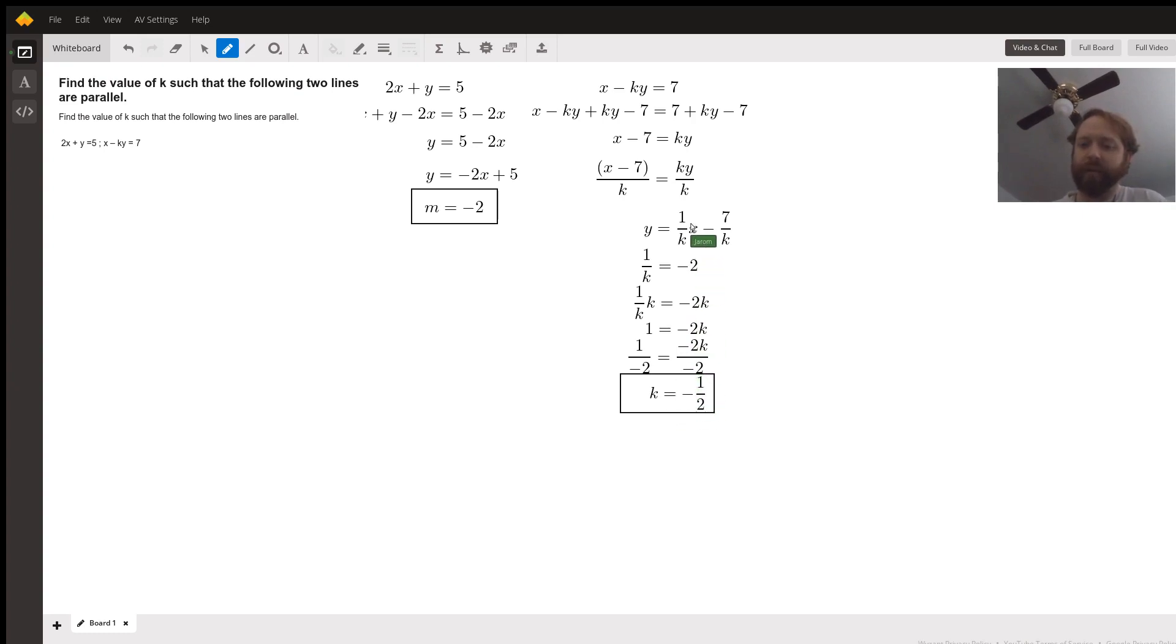If we plug that in, 1 over negative 1 half is negative 2. So y equals negative 2x plus 14 is what we end up with. That is in fact parallel to y equals negative 2x plus 5. Hope that helps. Thanks.